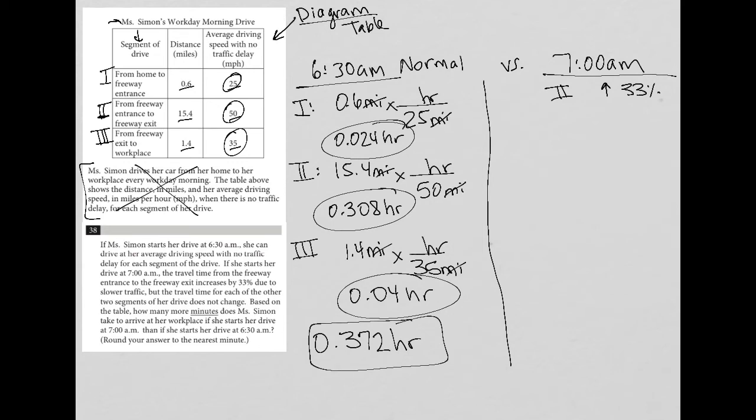At 7 AM, what changes? Phase one stays the same at 0.024 hours. Phase two has a 33% increase in time.